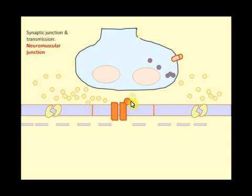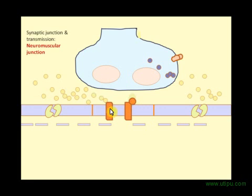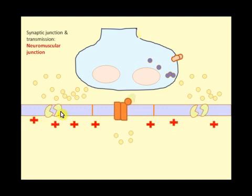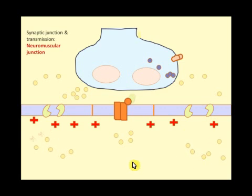The acetylcholine travels across the synaptic cleft and attaches to ligand-gated receptors. These gates open, allowing sodium ions to enter, causing a local depolarization — the end plate potential. This local depolarization, when it reaches threshold, opens the voltage-gated sodium channels, which causes the actual action potential.